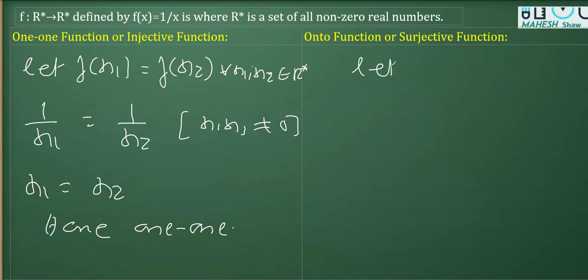Now in order to prove onto, let's say I'm going to replace f(x) with y. Therefore, if f(x) is written as y, we get y equals one over x, and clearly x is not equal to zero. If I write x in terms of y, we get x equals one over y.